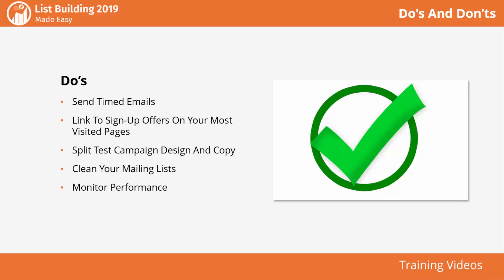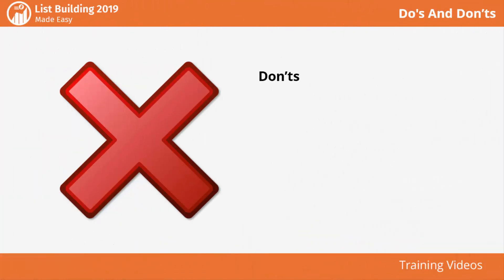Don'ts: Don't go overboard with pop-ups — don't bombard website visitors with signup pages and pop-ups. Instead, use targeted signup forms that offer upgrades or offers related to the content on the page where visitors opt in. Don't buy lists: contacts obtained from paid lists didn't opt in to receive your offers, so they're very unlikely to open your emails, let alone convert.